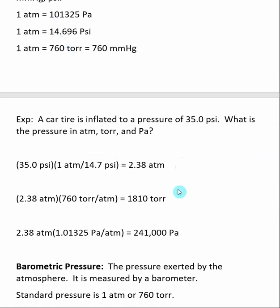35.0 psi is equal to 2.38 atm. So your car tire has a little bit more than twice the atmospheric pressure that you're feeling in the everyday environment.